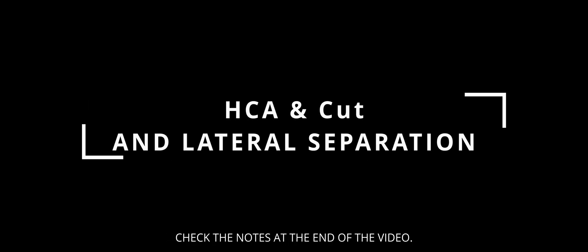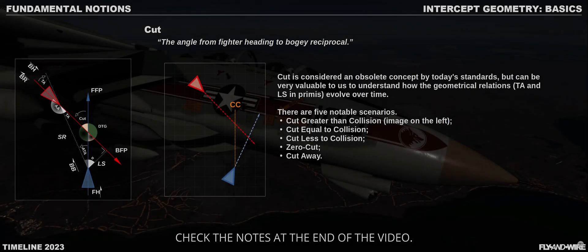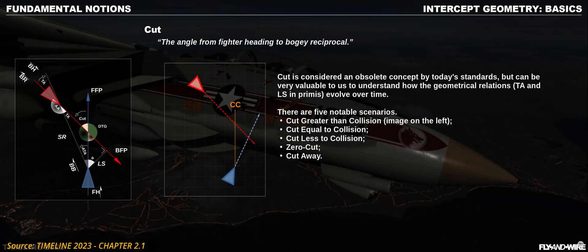HCA and cut and lateral separation. The heading cross angle, sometimes referred to as degrees to go or DTG, is the angle created by the intersection of the fighter's and the bandit's headings.